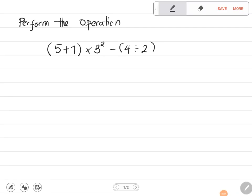Can you perform this operation: (5+1) multiplied by 3 squared minus (4 divided by 2)? First of all, we need to follow BODMAS, and we first have to work out what is in the brackets.